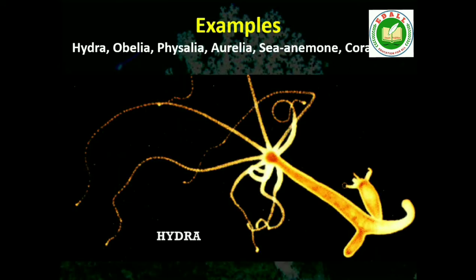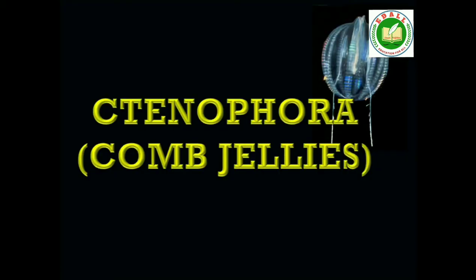Examples: Physalia (also called Portuguese Man of War), Adamsia (also called sea anemone), Pennatula (also called sea pen), Gorgonia (also called sea fan) and Meandrina (also called brain coral).